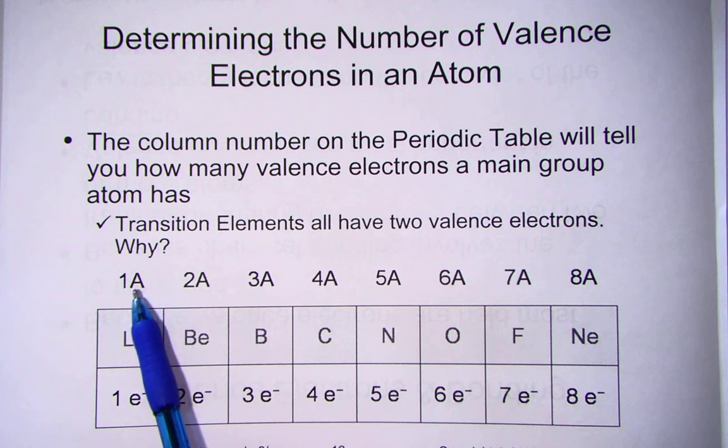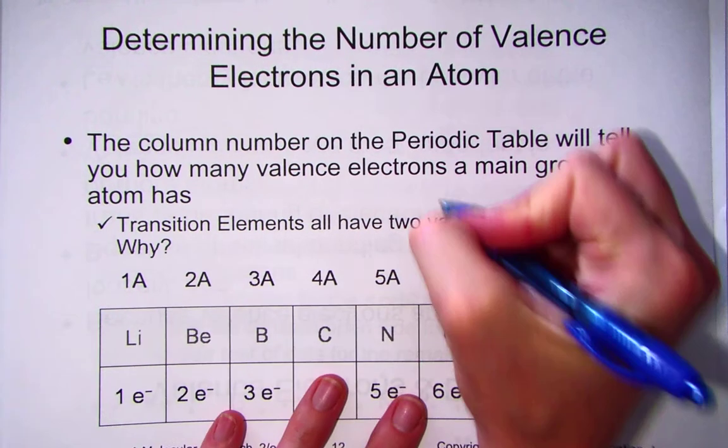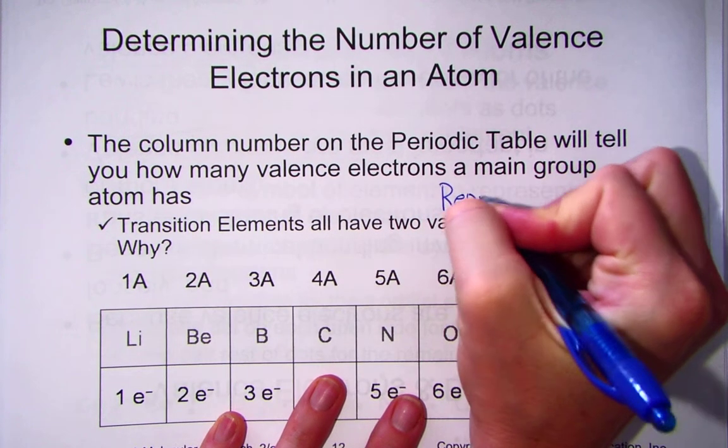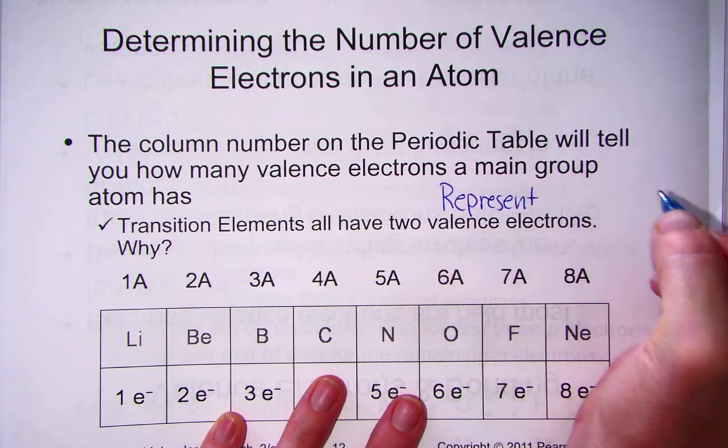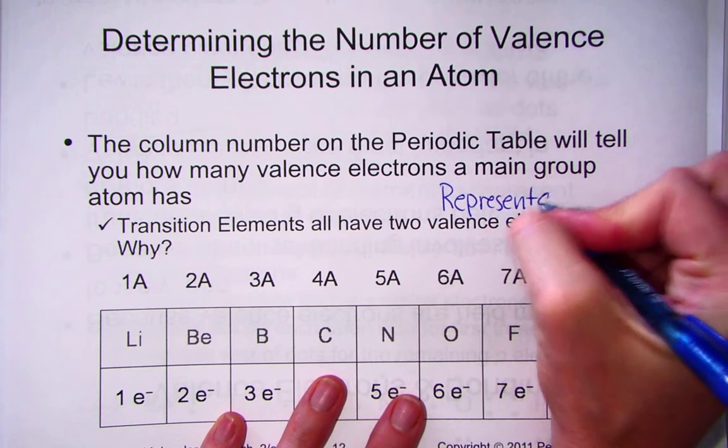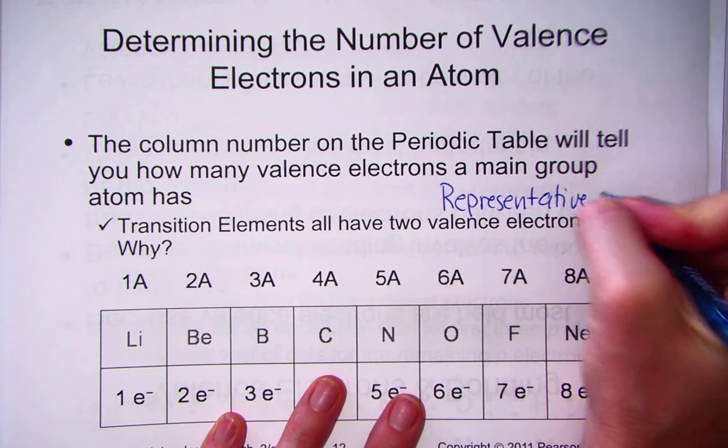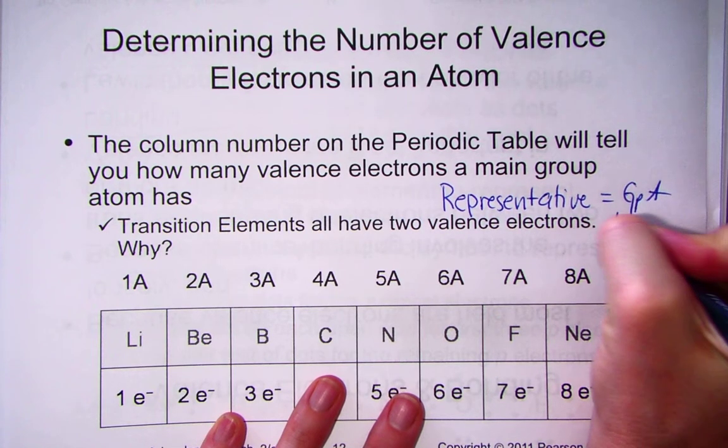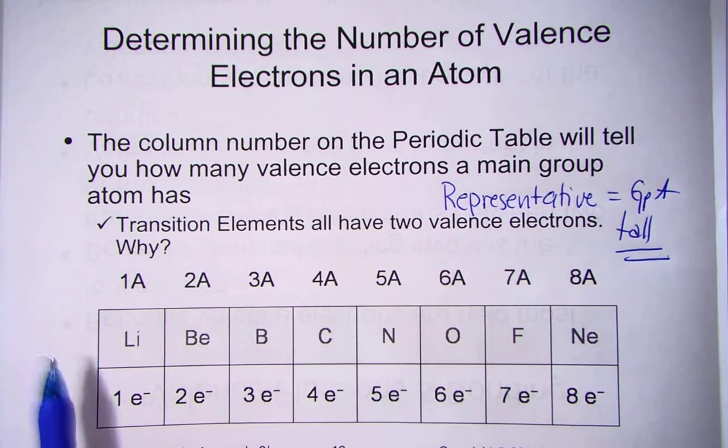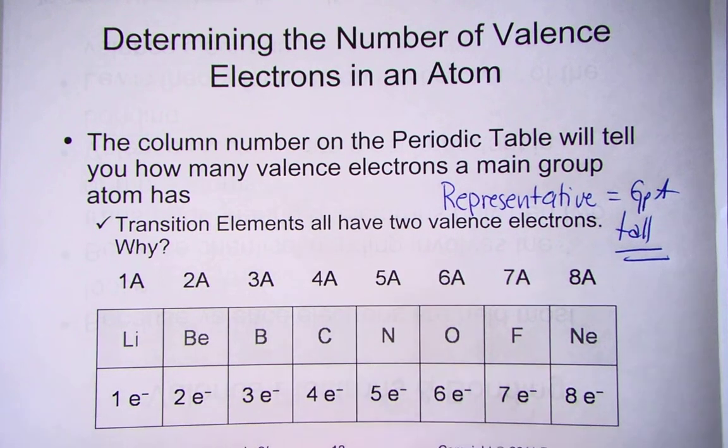Examining your periodic table, recall that we numbered our groups with A's and B's. Those representative elements represent their valence electrons. The representative elements are the group A tall columns on our periodic table. Take a peek with me at your table.